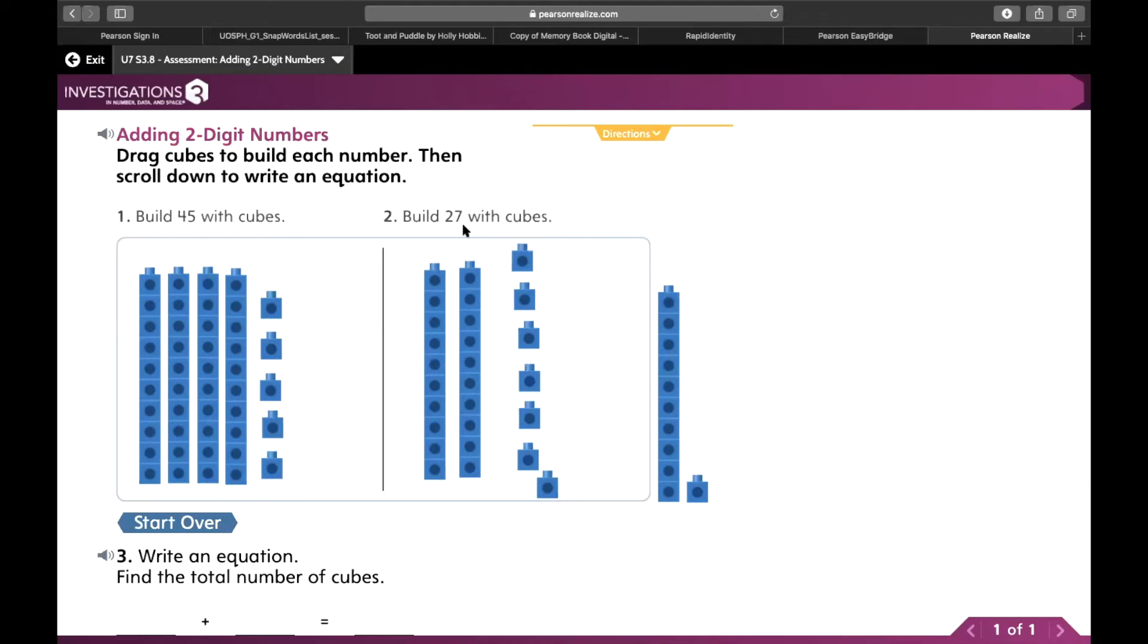Now it says build 27 with cubes. So that means I need two groups of 10, one, two, or 10, 20, and I have seven ones. So 21, 22, 23, 24, 25, 26, 27. So over here I have 45, here I have 27.